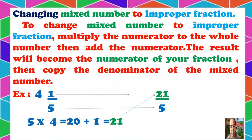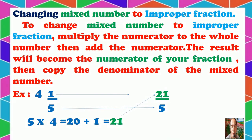Let's have another example, also taken from your assessment in your module. We have 4 and 1 fifth. This is a mixed number, so we will change it into an improper fraction. We multiply the denominator by the whole number: 5 times 4 gives 20. We add 1, which is the numerator, to get 21. So 21 will be your numerator, and we copy the denominator. The improper fraction is 21 over 5.